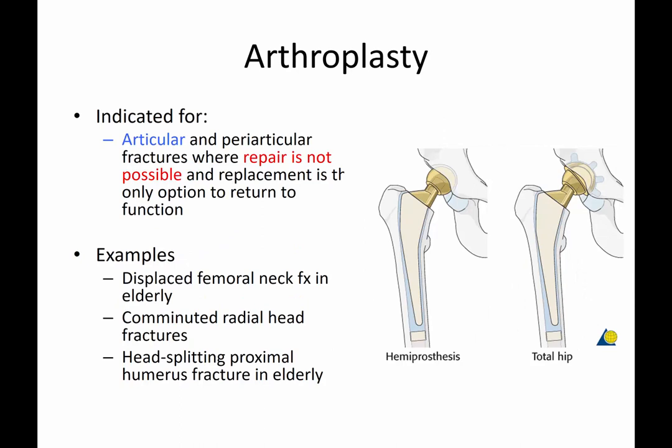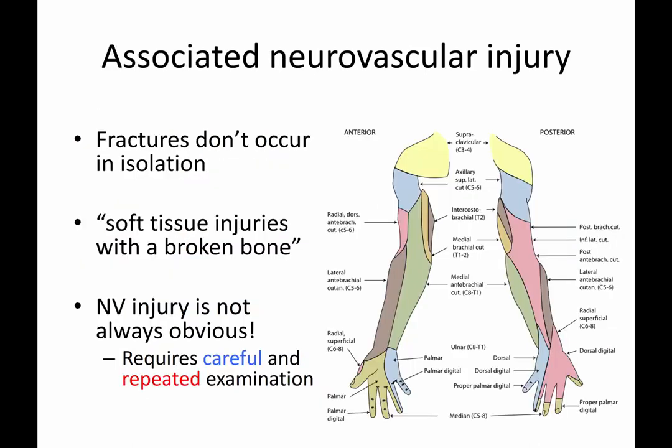Arthroplasty, as mentioned, is like a joint replacement. It's indicated for articular and periarticular fractures where repair is not possible and replacement is the only good option to return to function. One example is a displaced femoral neck fracture in the elderly — a periarticular fracture where the blood supply can be compromised. Comminuted radial head fracture or a head-splitting proximal humerus fracture in the elderly are other examples where arthroplasty may be done.